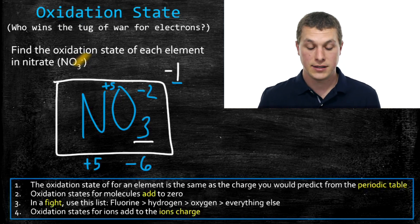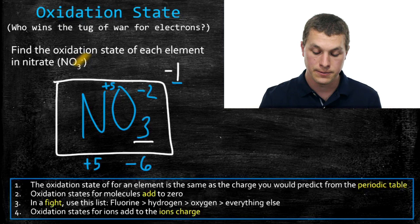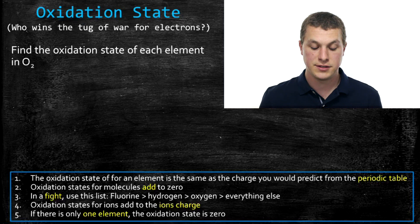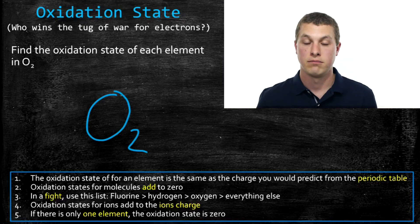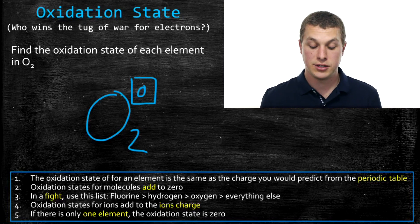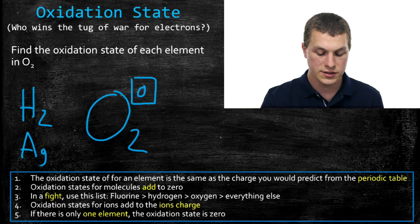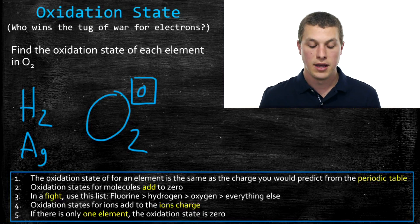For ions, instead of making the total oxidation state add up to zero, you make it add up to the charge on the ion. One last rule: if there's only one element in your compound, the oxidation state for everything in it is zero. So for O2, there's only one element — the oxidation state is zero. The same applies to H2, or silver (Ag) by itself. Anytime atoms are just by themselves as a single element type, they have an oxidation state of zero.